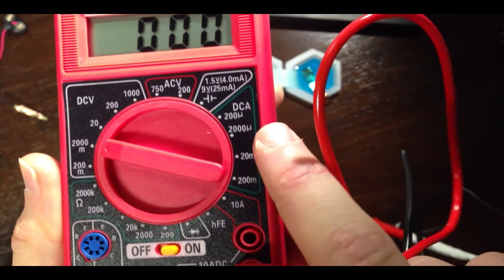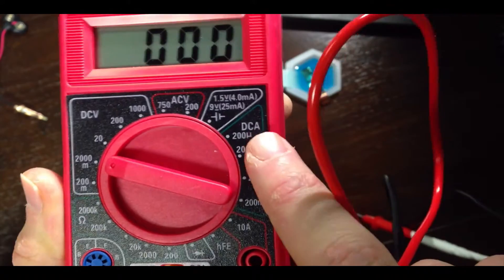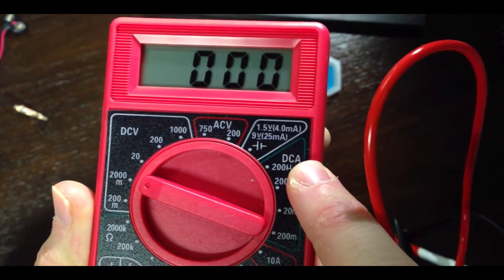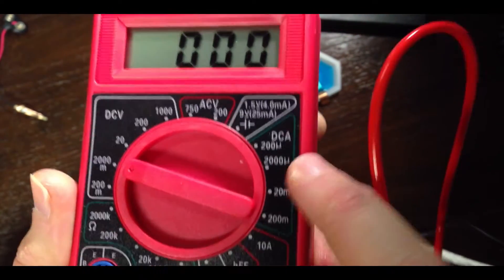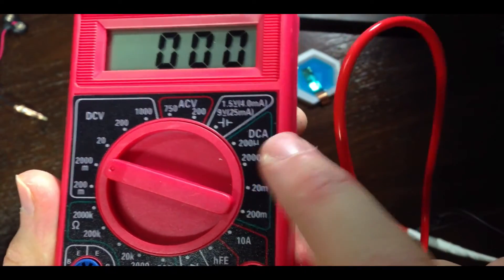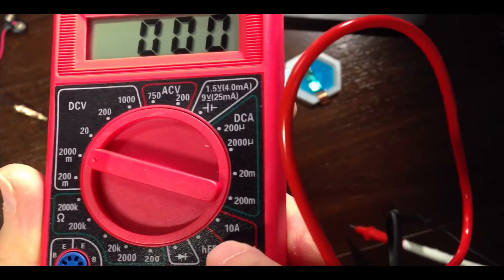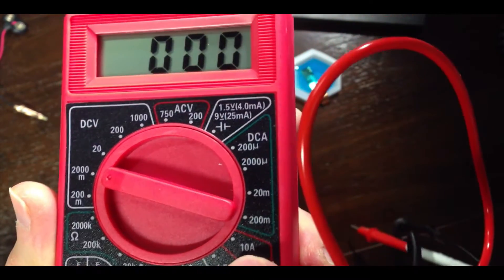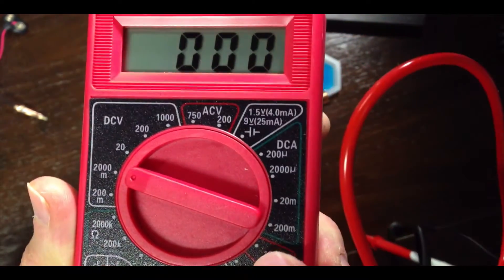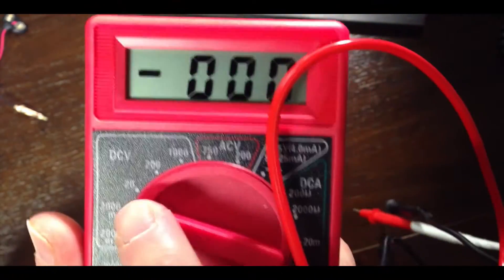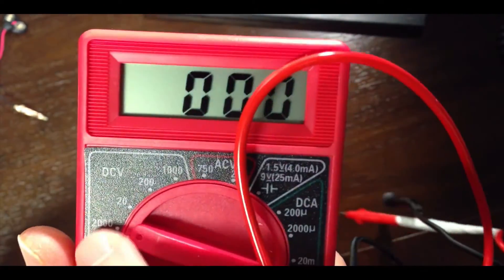Same idea applies on the DC current side. The A represents current, since the units of current are amperes, or A for short. We have settings of 200 micro, that's microamps. We have m for milliamps, and there is a 10 amp setting, which is separate, because this is actually a really large current value. So for our purposes, and in this video, we're just going to focus on the DC voltage region.